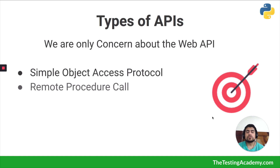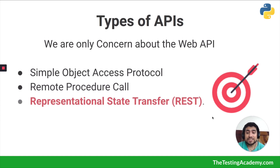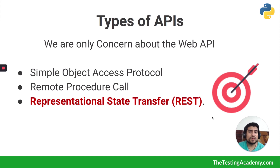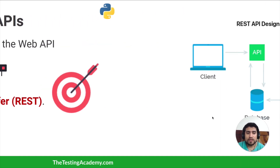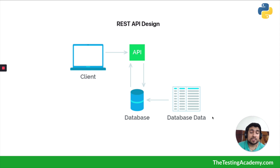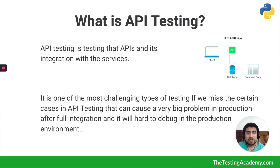Let's talk about the types of APIs. We have SOAP — Simple Object Access Protocol — we have RPCs, and we have REST. Here we are going to discuss only REST. With the REST API design, a client uses an API to connect with the server which is running a database.